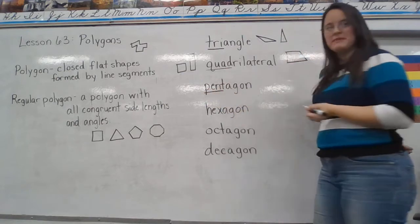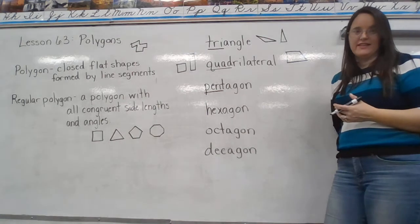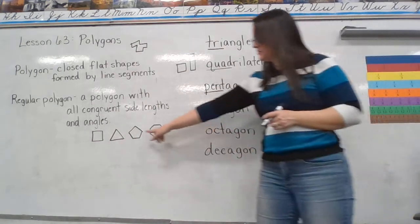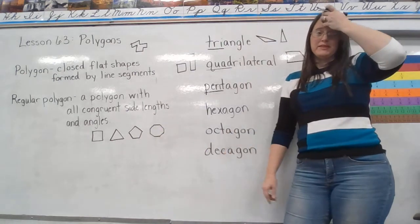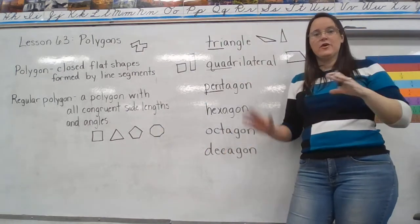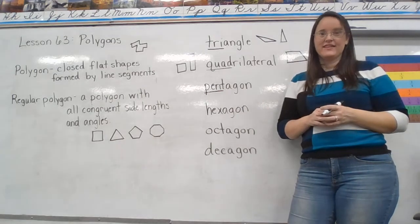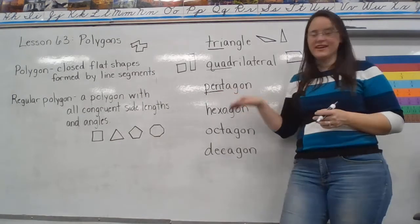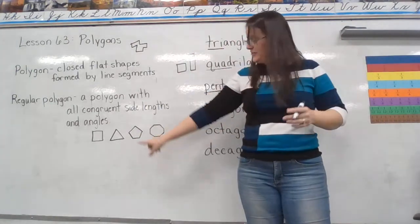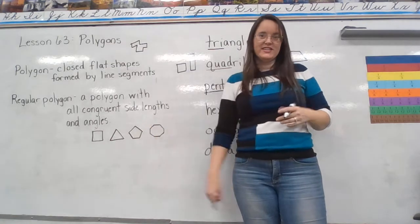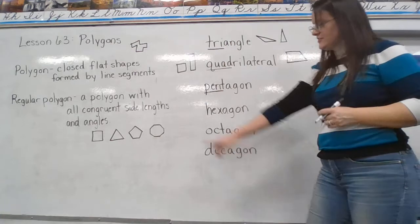Pentagon. Pent means five. So a five-sided polygon is called a pentagon. This one right here is a regular pentagon. There is a building in Washington, D.C. where government officials work called the Pentagon. The reason it's called the Pentagon is because if you look at it from an airplane, it's shaped like a pentagon — a five-sided polygon.